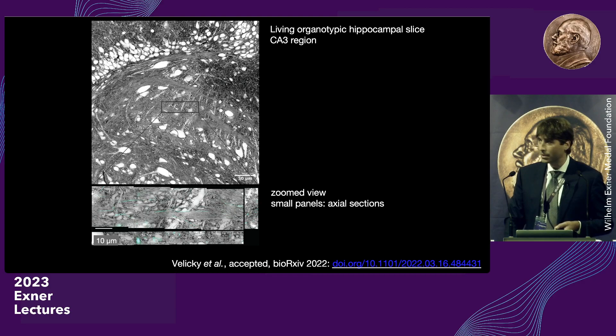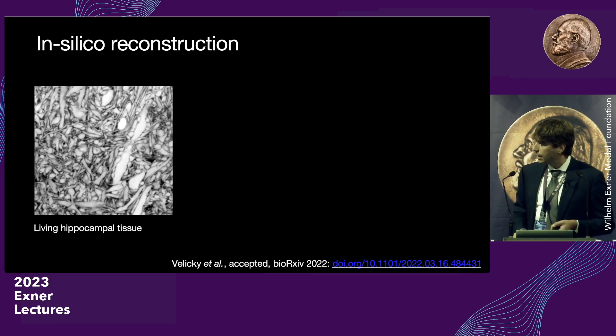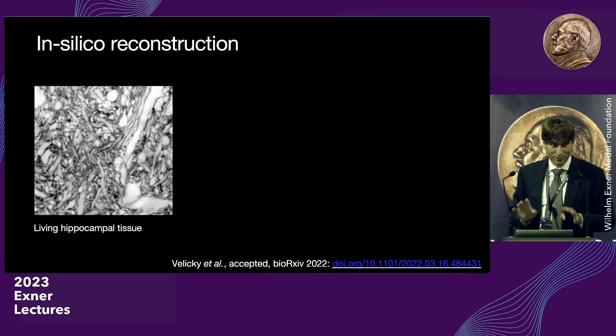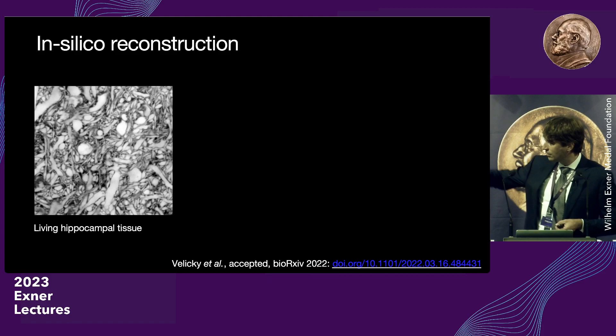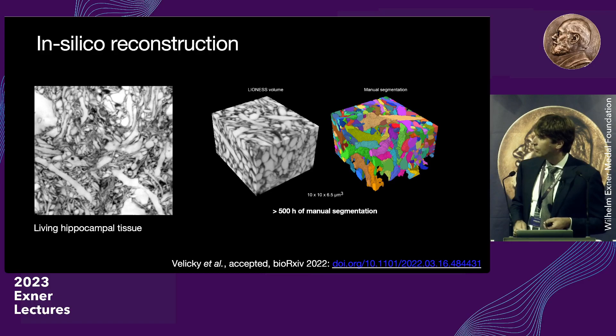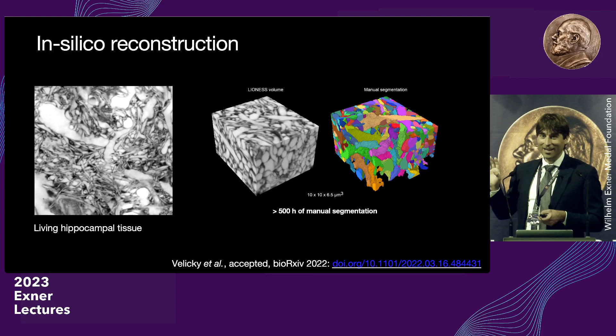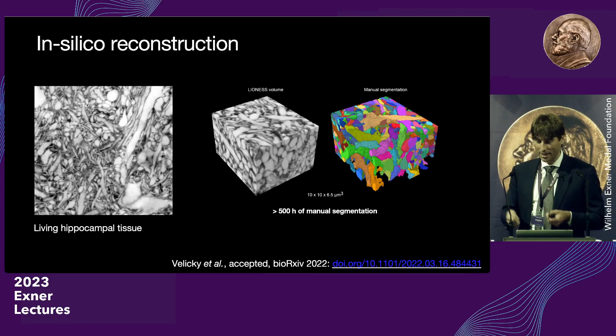When we fly through these imaging volumes, one gets the feeling it should be possible to trace this out — it almost feels that you could paint it. And quite frankly, this is exactly what we did: we sat down and started painting each individual cellular structure in these volumes, a process called manual segmentation. This is a very small volume — about 500 cubic microns — and it takes about 500 hours, so it's very poorly scalable, but in principle it shows you can trace out these structures.